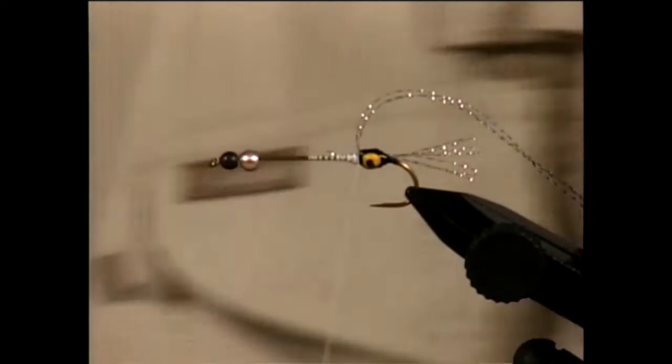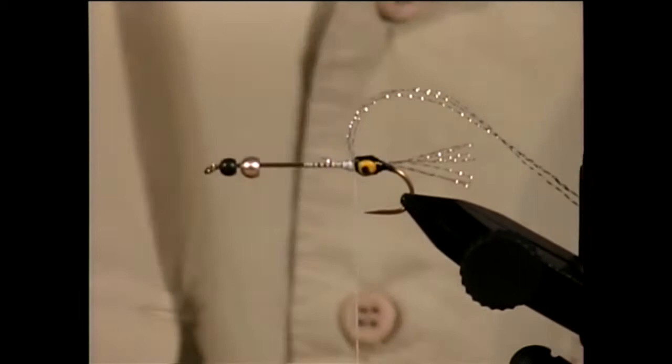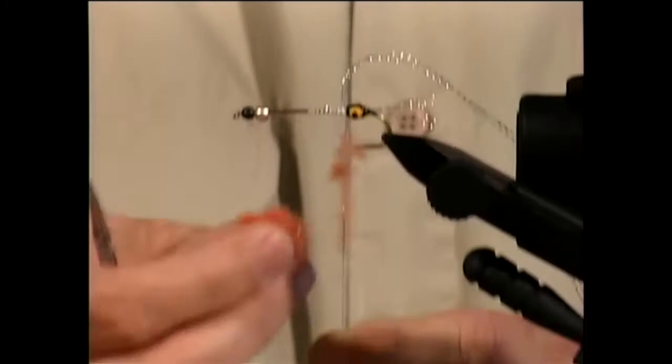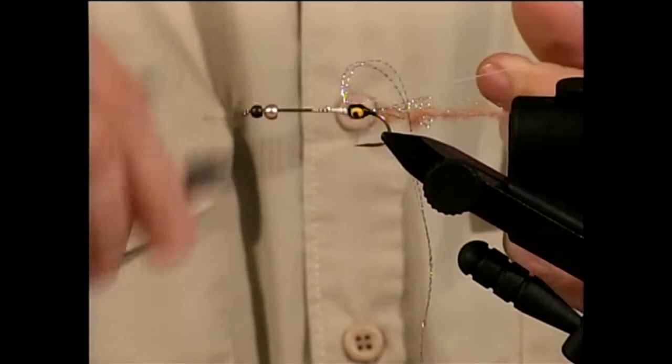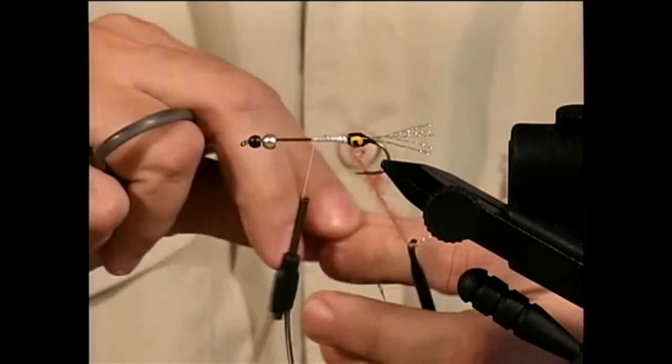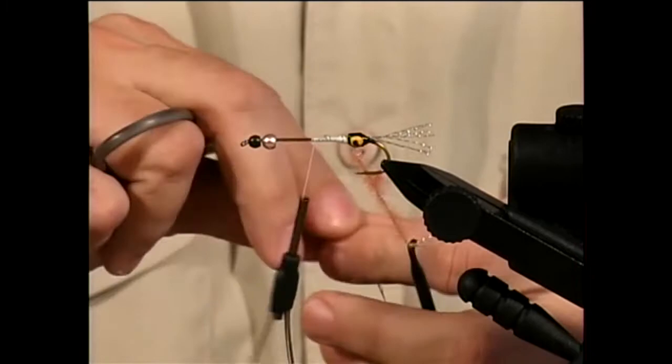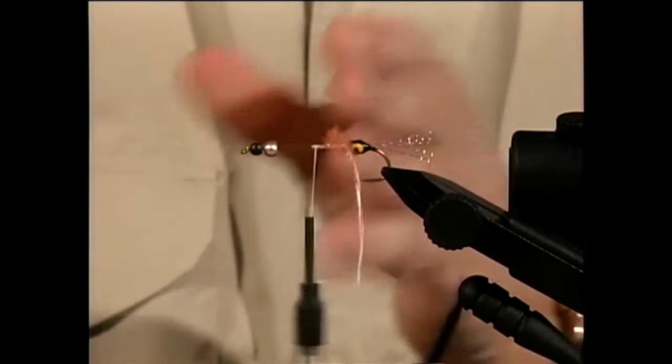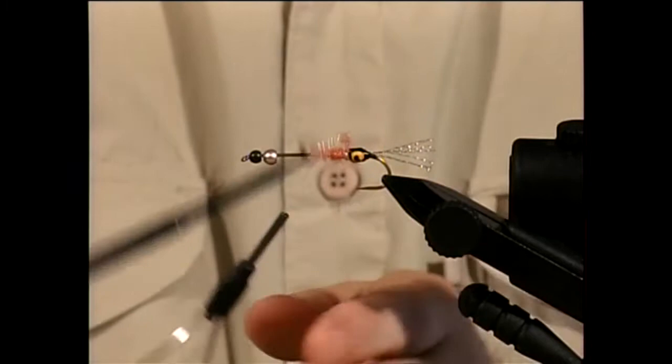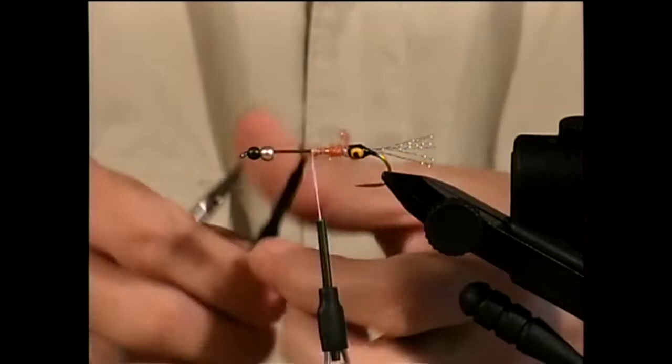And then I'm going to apply some wax to the thread and touch dub some orange antron. I don't want too much. I don't want it to overpower the silver crystal flash. I'm going to bring this around in a dubbing loop, close the end, and trim one side. I'm going to use my electrical clip to twist this like I did before. It seems like I have more control using this method. I'm going to twist this up, the antron and the crystal flash, and wrap this for the body. This gives a really good buggy body with the shine of the silver crystal flash. Half of the body will be wrapped with the double magic technique, and about the midway point, I'm going to tie that off.